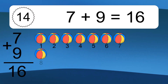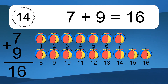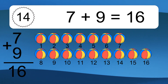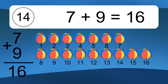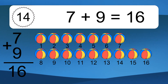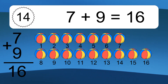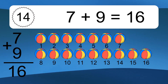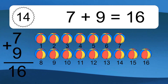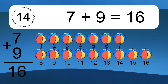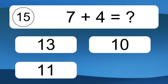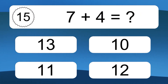7 plus 9 equals what? 7 plus 9 equals 16. Let's count it: 1, 2, 3, 4, 5, 6, 7, 8, 9, 10, 11, 12, 13, 14, 15, 16.